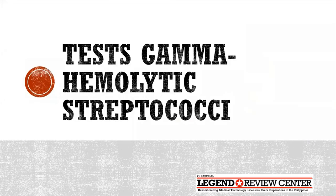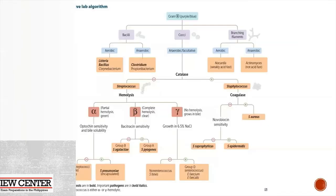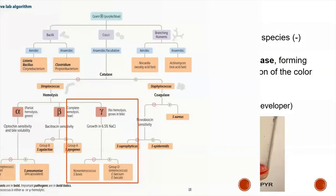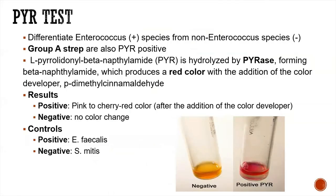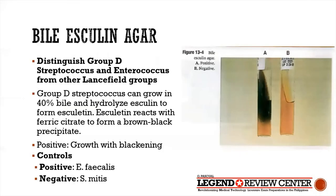For gamma-hemolytic strep, you can do the PYR test, which differentiates Enterococcus species from non-Enterococcus species. Group A strep are also PYR-positive, as previously discussed. The positive result is pink to cherry-red. Another test is bile esculin agar, which differentiates Group D strep and Enterococcus from other Lancefield groups. Group D grows in 40% bile.